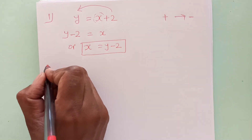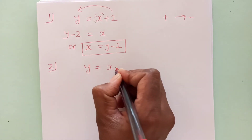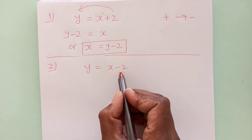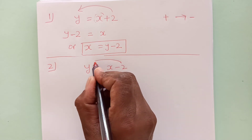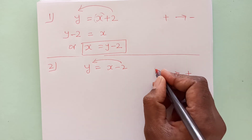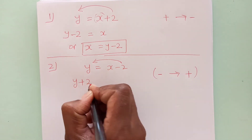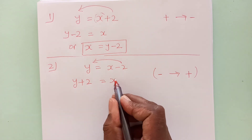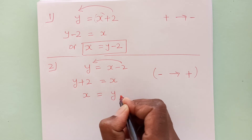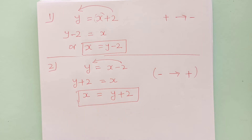Let's take another example. Say we have y equals to x minus 2 instead of x plus 2. Now you have a minus here, so we will shift the minus to the other side. From minus it will become positive — negative will become positive. So it will be y plus 2 equals to x, which we write as x equals to y plus 2. Now we have made x the subject.